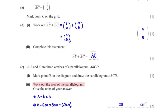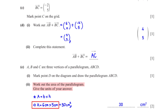Work out the area of the parallelogram and give the units of your answer. The formula for the area of a parallelogram is base times height. From the grid, the base B is 6 cm and the height H is 5 cm. This gives us 30 cm².